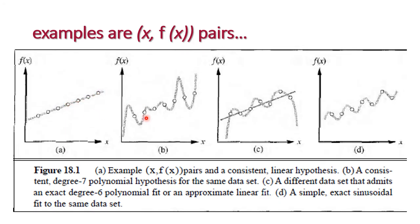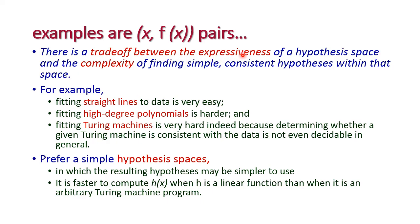In diagram B, all data points are exactly fit into a degree-seven polynomial hypothesis for the same set of data. In diagram C we have two functions: the linear hypothesis and a degree-six polynomial fit. The degree-six polynomial fit is exact, but the linear hypothesis is only approximate — most of the inputs do not fit into the linear hypothesis function. In the fourth diagram, it is exactly fit using a sinusoidal function — the hypothesis function is a sinusoidal hypothesis.